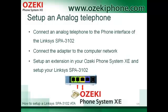Three things are necessary to use your analog phone as an extension in your Azaki Phone System AXE. First, you need to connect an analog phone to the adapter's phone interface. Then, you need to connect the adapter to the local network. And finally, you need to set up your adapter and phone system with the same parameters.